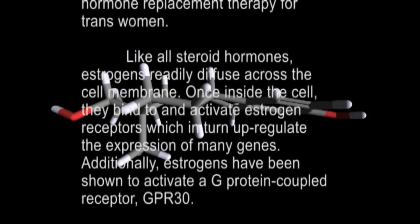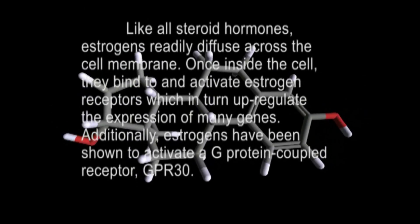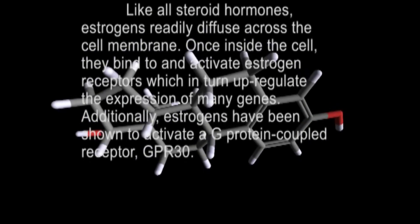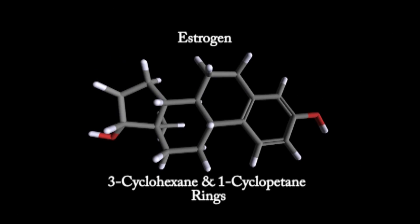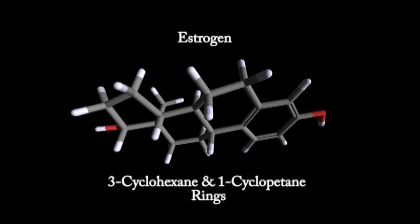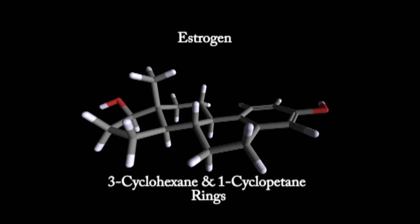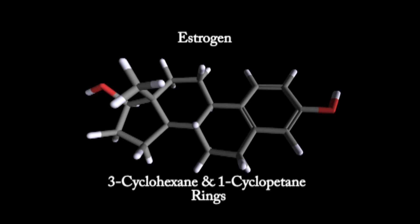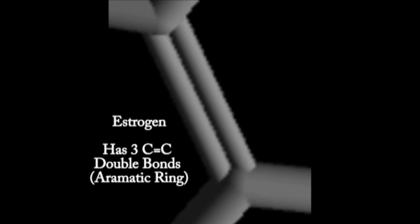Additionally, estrogens have been shown to activate a G-protein coupled receptor, GPR30. Estrogen also contains three cyclohexane rings and one cyclopentane ring, with two alcohol groups and three carbon double bonds.